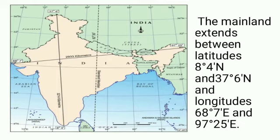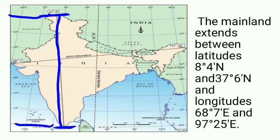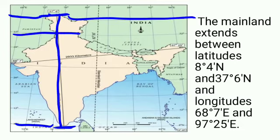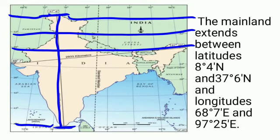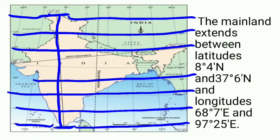Let us take the political map of India and see the mainland extents between latitudes and longitudes. The latitudinal extent is from 8 degrees 4 north to 37 degrees 6 north. From this side we can take this extent - these are the lines by which we can mark the latitudinal extent.